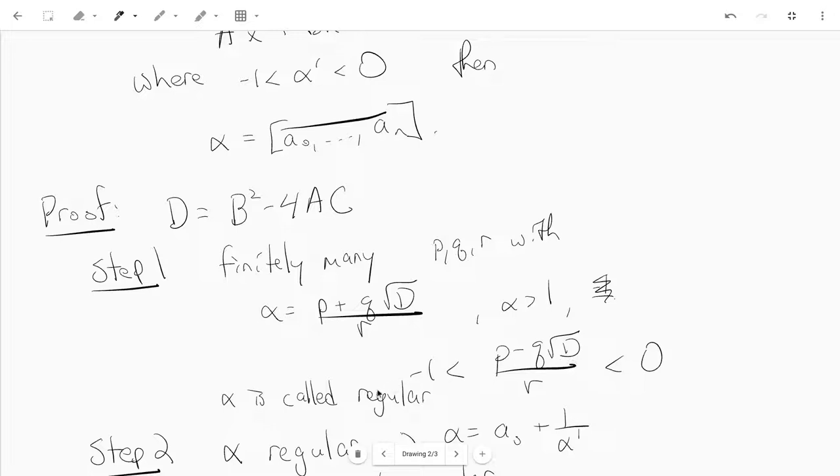If you call an alpha like that regular, you've proved that for fixed d, there's only finitely many solutions to this inequality. That's step one.